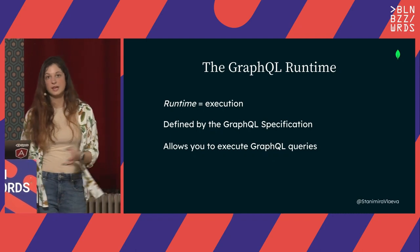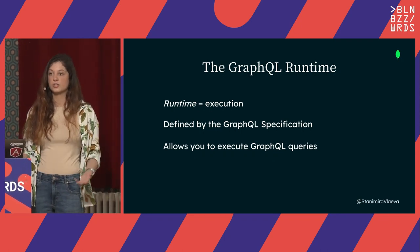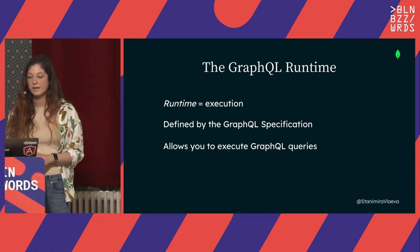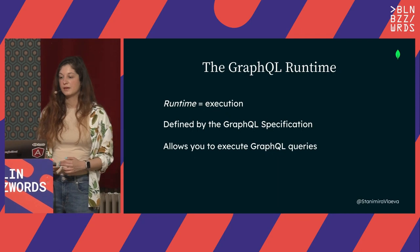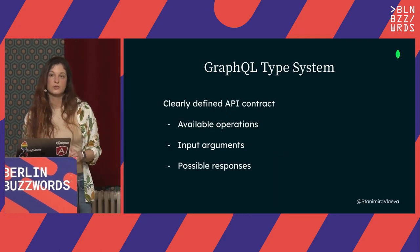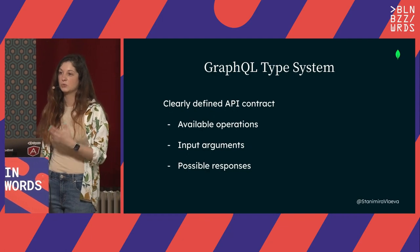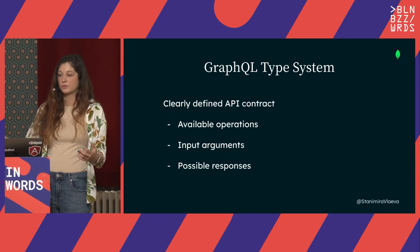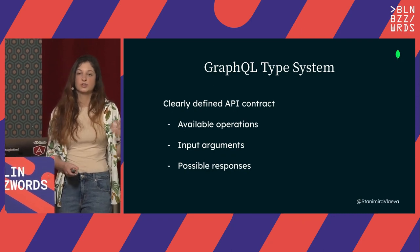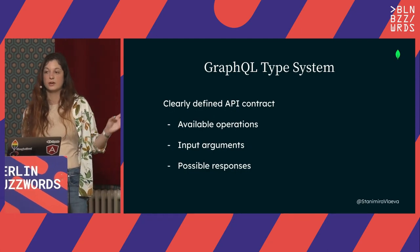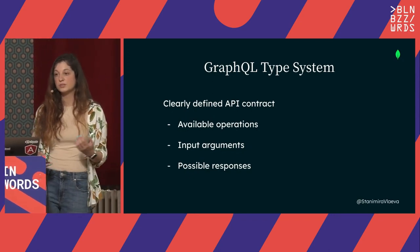What about the runtime? The runtime here means the execution environment — when we run our program, what is the execution environment that can understand a GraphQL query? It is defined by the specification, and you can implement it yourself — it allows you to execute GraphQL queries. There is one more thing: it's not just the query language and the runtime. There is also a type system. This is really cool because it's a clearly defined contract between the client and the server. When you request data, if you misspell something or put the wrong type, you'll get an error. The contract contains the available operations, field names, input parameters, and all possible responses.